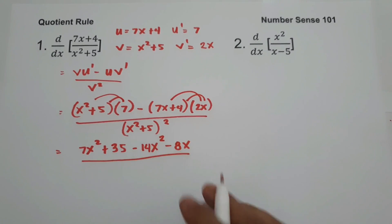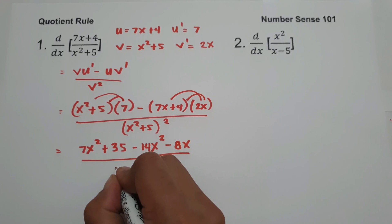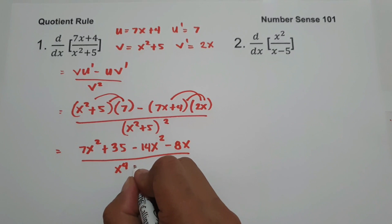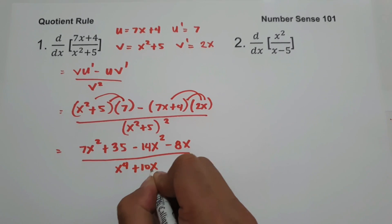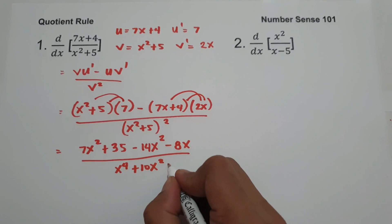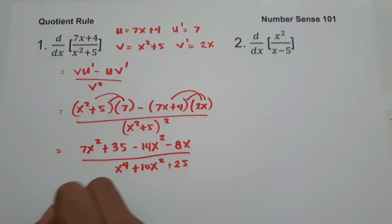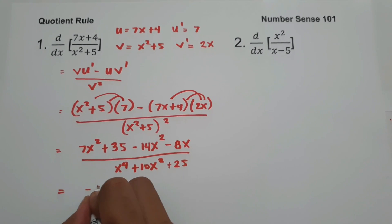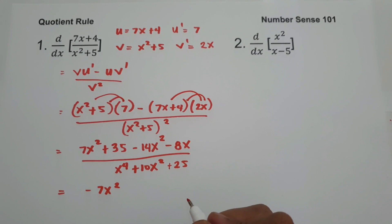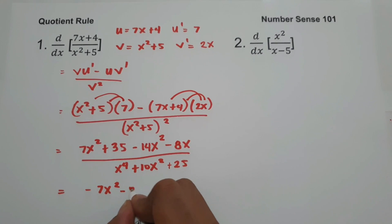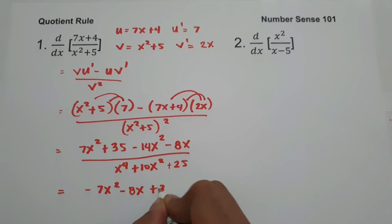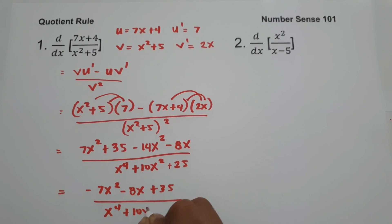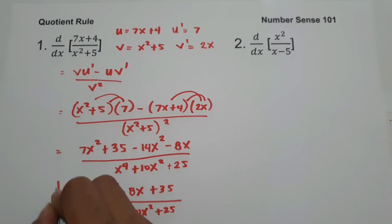For the denominator, we expand (x² + 5)²: x² times itself is x⁴, x² times 5 gives 10x² (times the constant 2), and 5 times itself is 25. Combining the numerator terms, 7x² minus 14x² is negative 7x². So the final answer is: (negative 7x² minus 8x + 35) over (x⁴ + 10x² + 25).